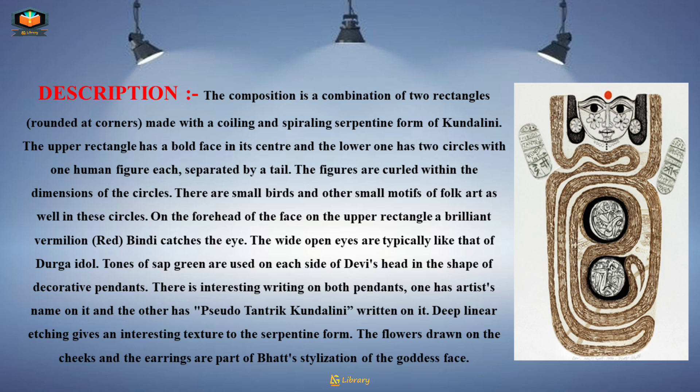Description: The composition is a combination of two rectangles, rounded at corners, made with a coiling and spiraling serpentine form of Kundalini. The upper rectangle has a bold face in its center and the lower one has two circles with one human figure each, separated by a tail.